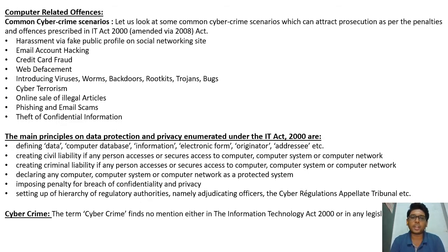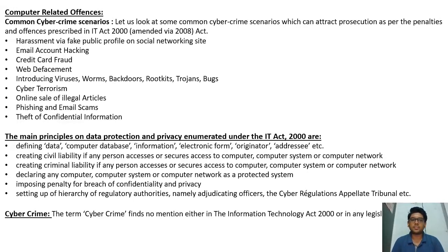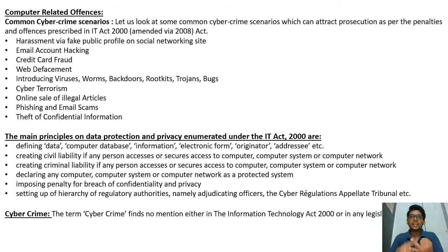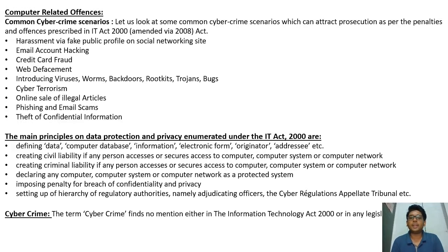The main principles on data protection and privacy under the IT Act 2000 include: defining data, computer database, information, electronic form, originator, addressee, etc.; creating civil liability; creating criminal liability; declaring any computer, computer system, or computer network as a protected system; imposing penalty for violation or breach of confidentiality and privacy; and setting up a hierarchy of regulatory authorities, namely adjudicating officers, the cyber regulatory appellate tribunal, etc.